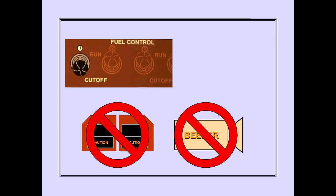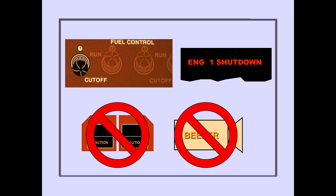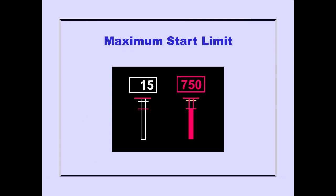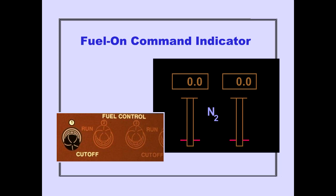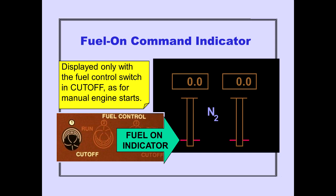The ICAS caution message Engine Shutdown is displayed when the fuel control switch is in cutoff. The associated caution lights and aural tone are inhibited with this message. With the fuel control switch in cutoff, the maximum start limit is displayed as a red line on the EGT indication. During engine start, if EGT reaches the maximum start limit, the indication changes color to red. The fuel on command indicator is displayed as part of the N2 indication when the fuel control switch is in cutoff. The fuel on command indicator shows the minimum N2 RPM at which the fuel control switch should be positioned to run during engine start.